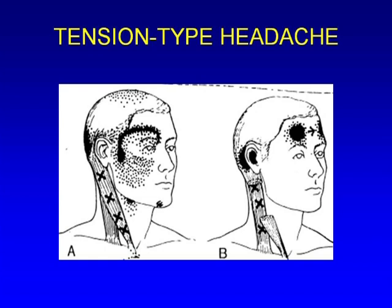Tension-type headache is the most common headache. We don't see it much in clinics when it's episodic, because it's less disabling — but when it becomes chronic we see it, and sometimes we treat it incorrectly as migraine. Tension-type headache was previously called muscle contraction headache; all studies have been negative for muscle pathology. It's probably more a condition related to the brain, similar to fibromyalgia, where muscle pain is now considered a secondary phenomenon.